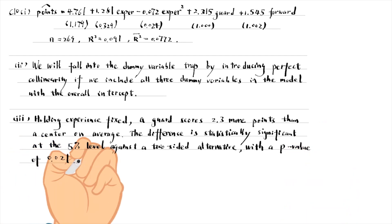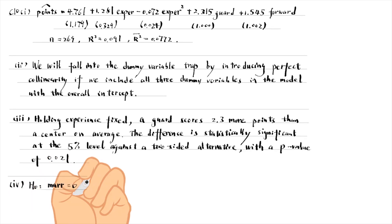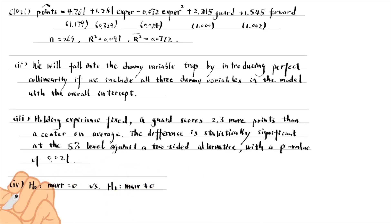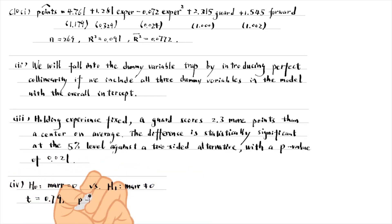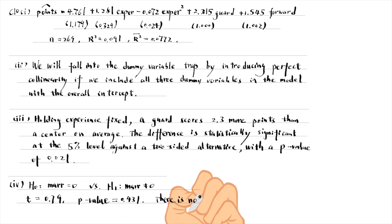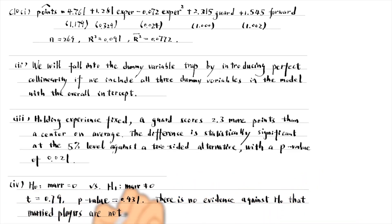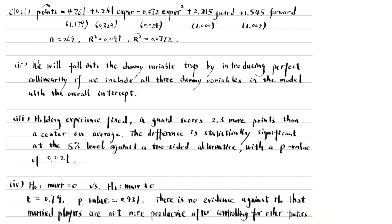The difference is statistically significant at the 5% level against a two-sided alternative with a p-value of 0.021. For part 4, the t-statistic for the coefficient on marital status is 0.79, and its p-value is 0.431.